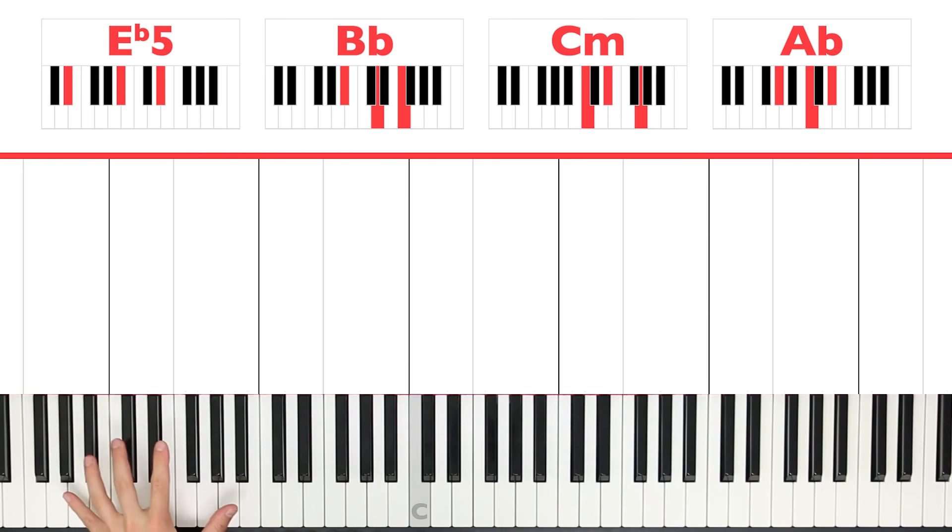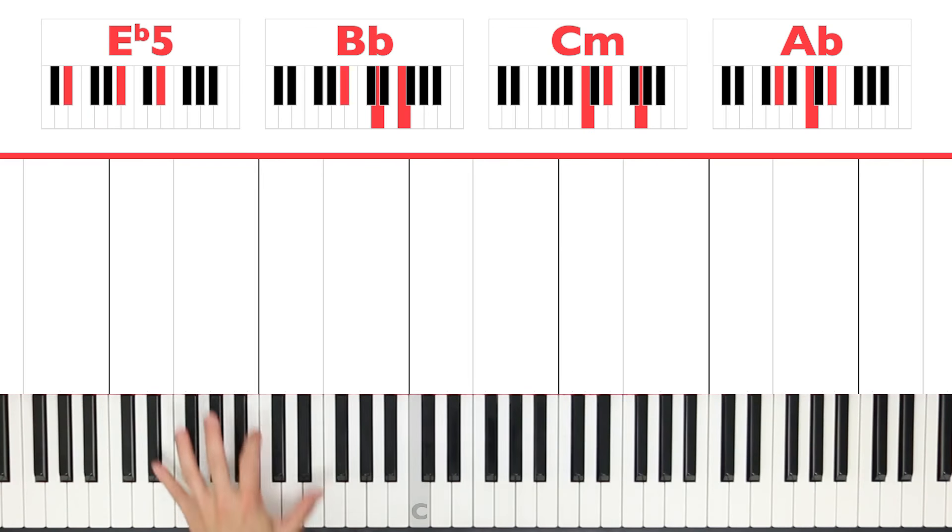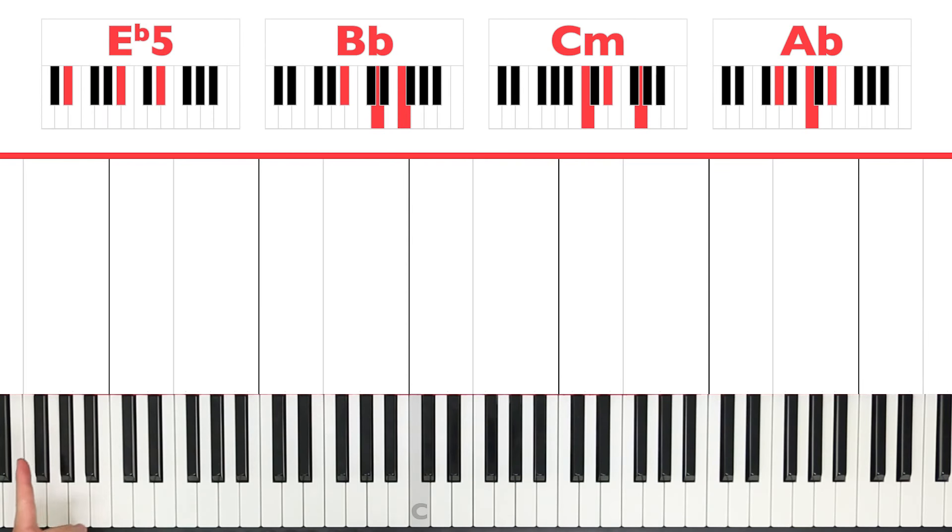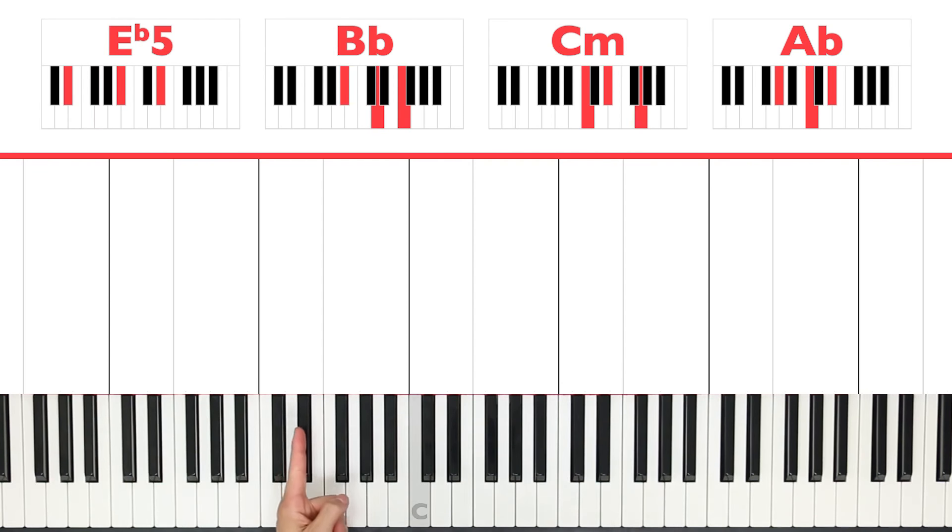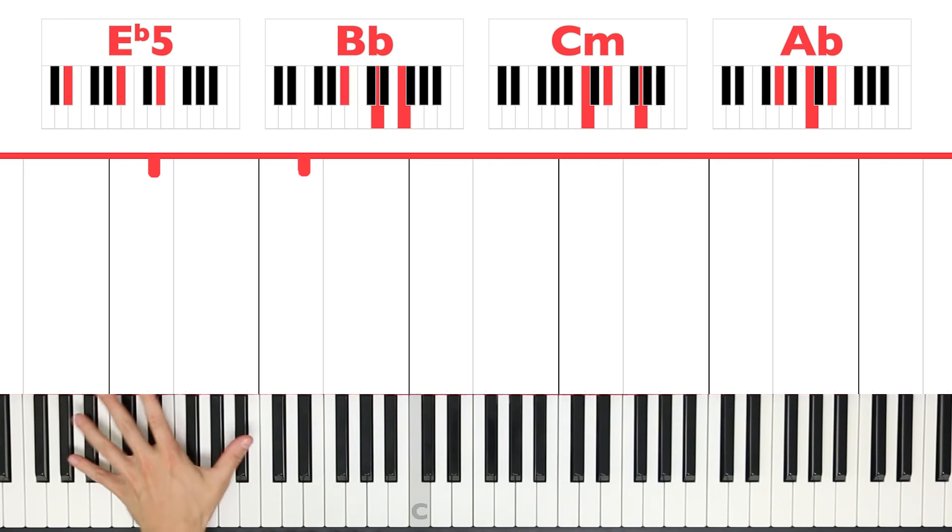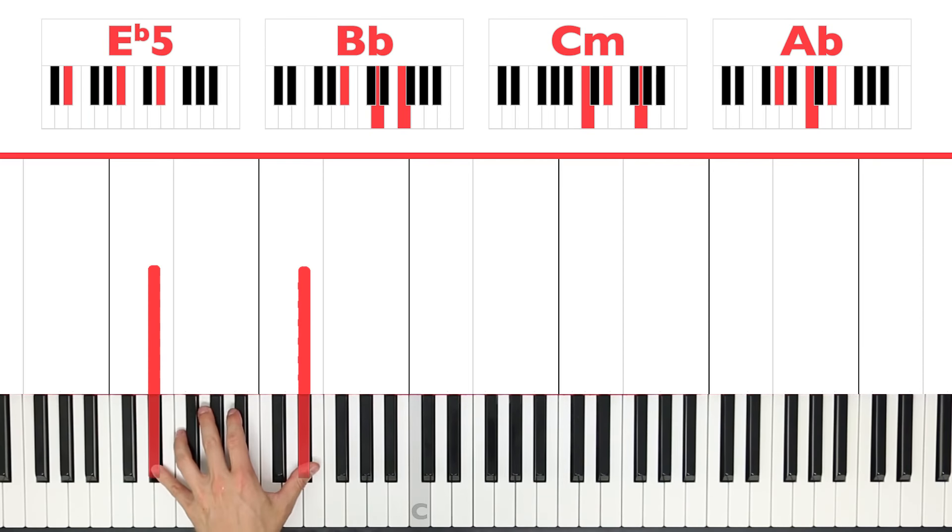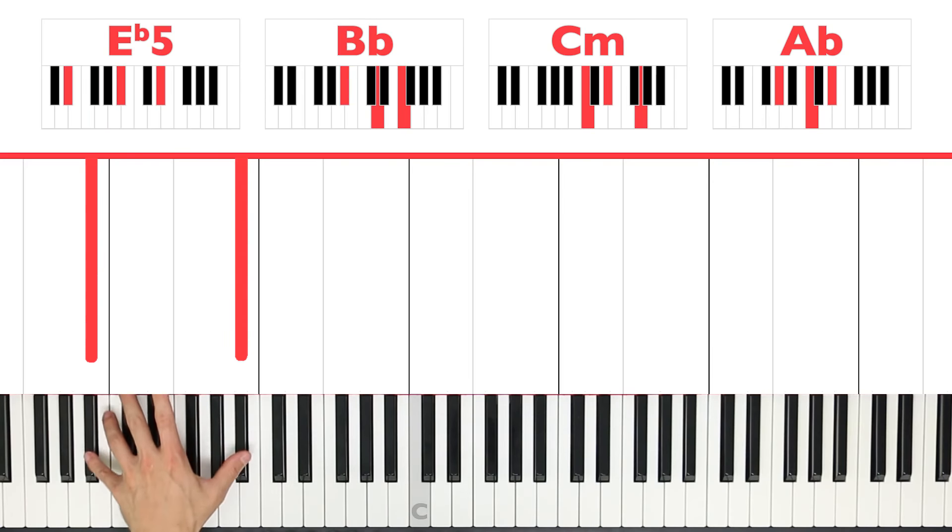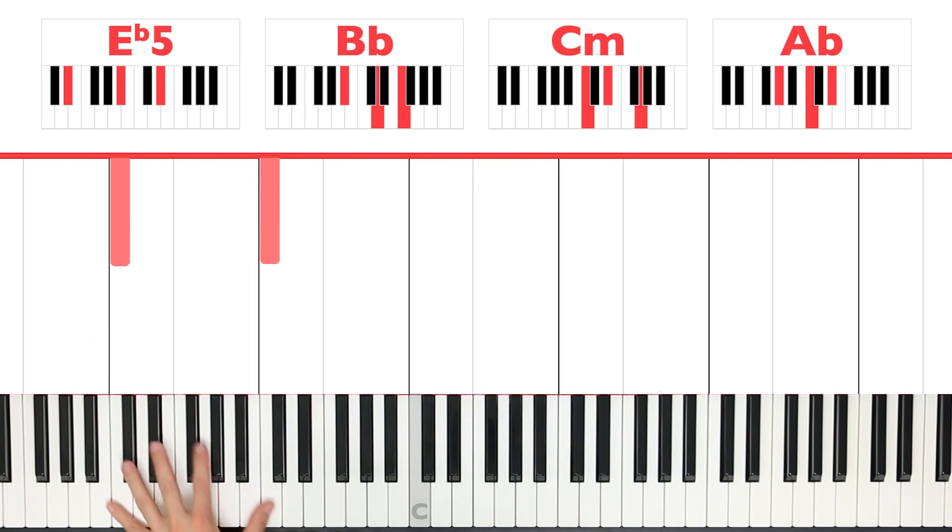So first let's have a look at the left hand. We're going to be playing octaves and an octave simply means you play a note with your pinky and the same note with your thumb. So an E flat with the pinky and an E flat with the thumb. Which notes do we have to play? Well let's have a look above the piano. It's simply the name of the chord: E flat, B flat, C and A flat.